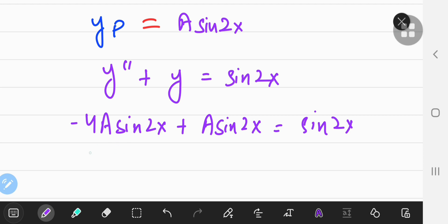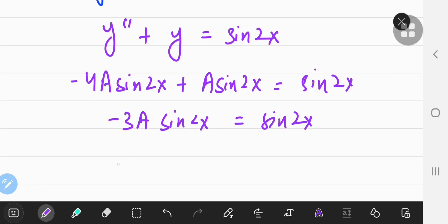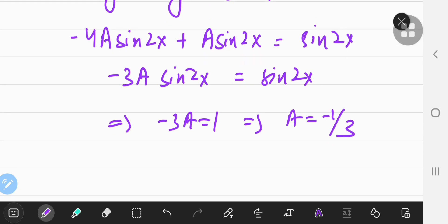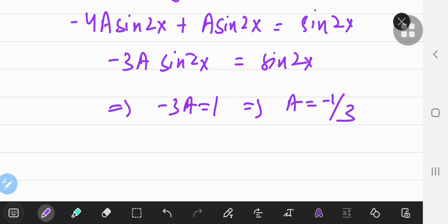We see that the left-hand side reduces to negative 3a times sine 2x equal to sine 2x, which implies, by the comparison of coefficients, that negative 3a equals 1 or a equals negative 1 by 3. So now we have the particular solution that is y sub p equals negative 1 by 3 times the sine of 2x.